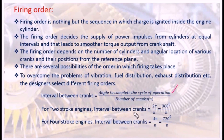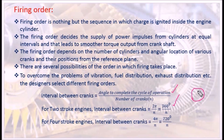For two-stroke engines, the cycle of operation is 360 degrees — that is one full rotation of the crank. The four strokes are: suction, compression, ignition (power), and exhaust.